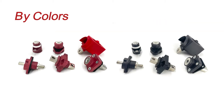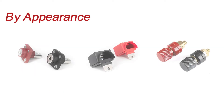According to the color of the product, they can be mainly divided into red and black. Normally, red is used for the positive pole and black for the negative pole. And in accordance with the appearance, they can be divided into three categories: stud, square, and cylindrical.